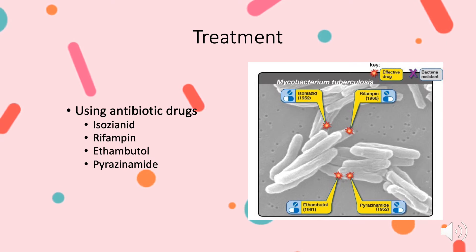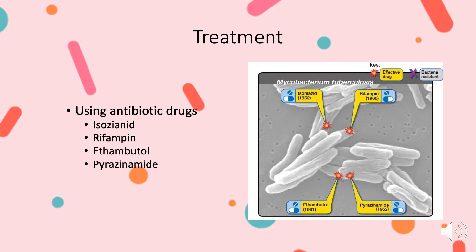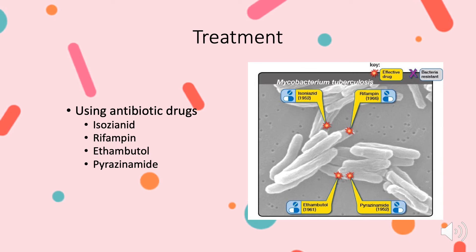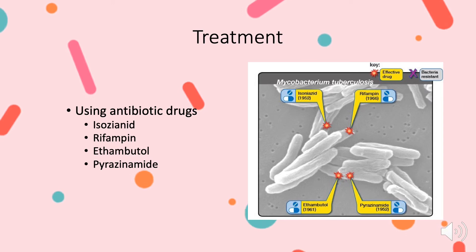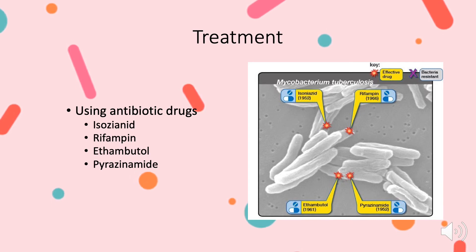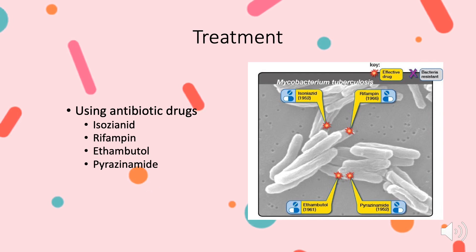Isoniazid, rifampin, ethambutol, and pyrazinamide are all antibiotics that have been found to be effective against TB. Normally, people should begin to take antibiotics when they are in the latent stage so that they can get rid of the pathogen before it becomes active. If it has already become active, more than one antibiotic may need to be taken at the same time. If the patient decides to stop treatment or skips doses, this will cause the bacteria to continue living and can make it resistant to those drugs, which makes it harder to treat afterwards. If the patient has drug-resistant TB, antibiotics such as fluoroquinolones will need to be taken.